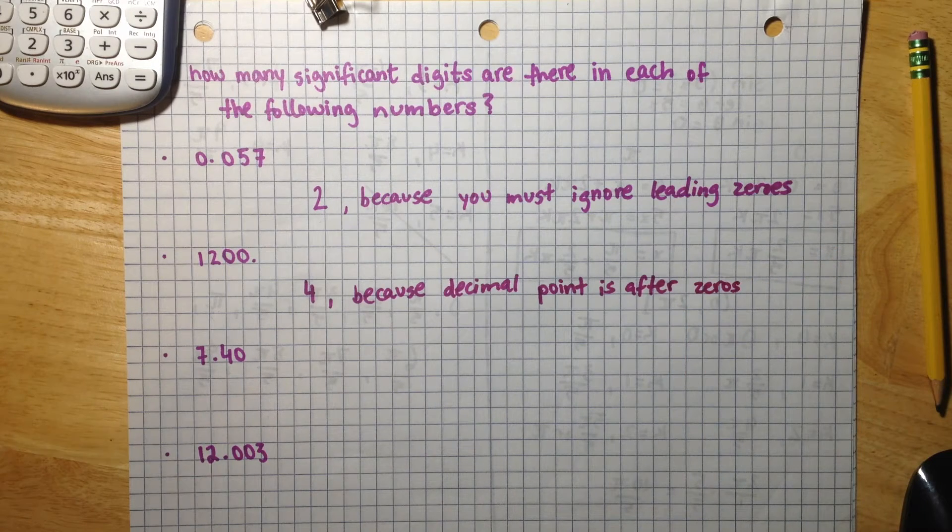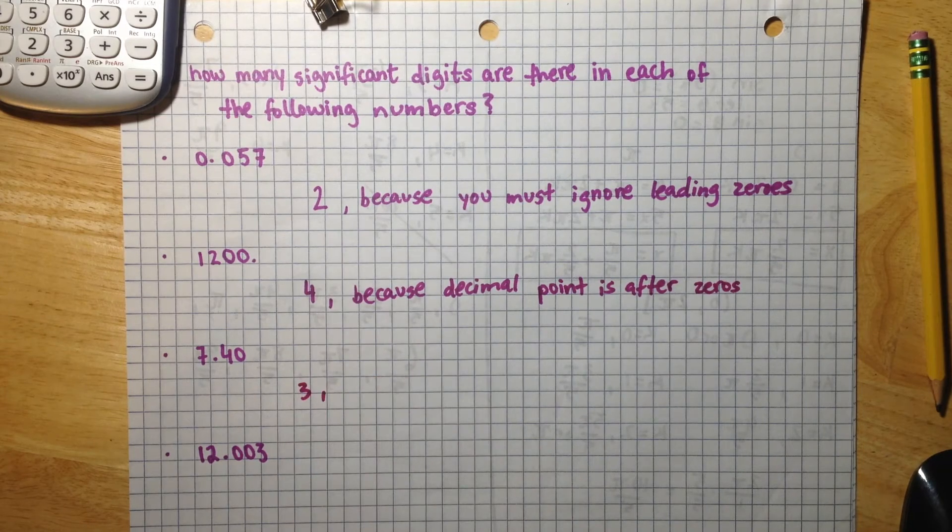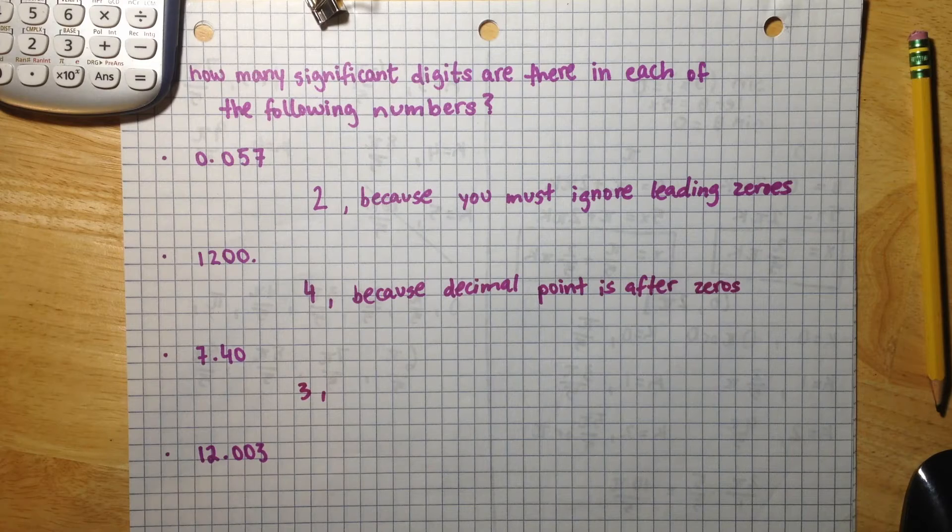The next number is 7.40 and this number has three significant figures because if the number contains a decimal point then all trailing zeros are significant.